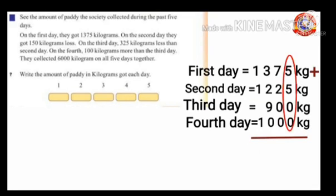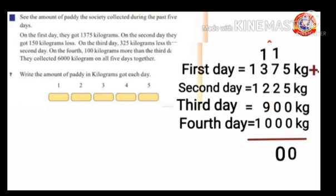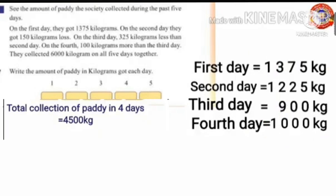Adding: 5+5+0+0 = 10, write 0, carry 1. 7+2+0+0+1 = 10, write 0, carry 1. 3+2+9+0+1 = 15, write 5, carry 1. 1+1+1+1 = 4. Total collection of paddy in four days equals 4500 kilograms.